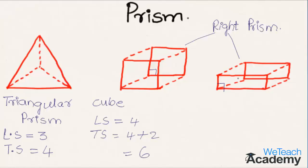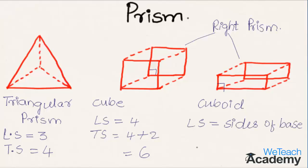Coming to the next prism where the base is in the shape of a rectangle — we name this prism a cuboid. The lateral surfaces of the cuboid equal four, same as the cube. And the total surfaces equal six. So the lateral surfaces of a prism equal the number of sides of its base.